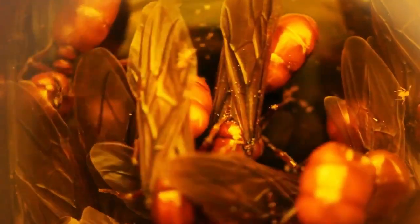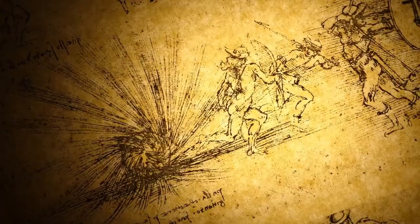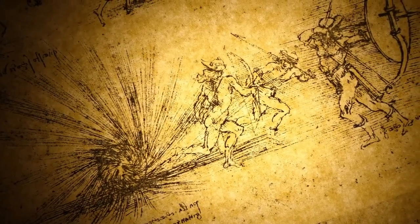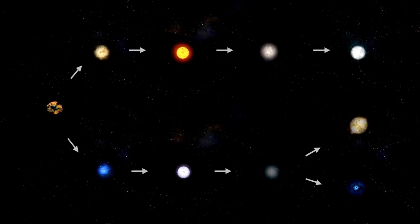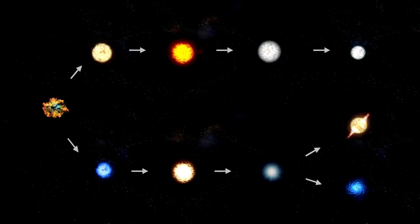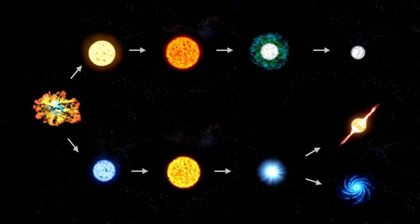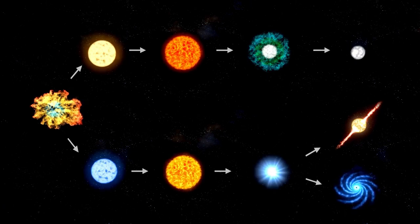One of Betelgeuse's cosmic cousins is Antares, a red supergiant located in the constellation Scorpius. Antares is also a variable star, meaning that it undergoes changes in brightness over time, just like Betelgeuse.